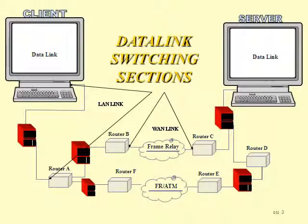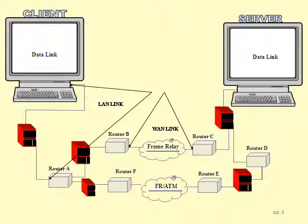Here we have the links shown in our case study. Notice in the middle of the links we're showing switches, but earlier we were showing hubs. Switches are intelligent devices that make decisions — we can call them routing decisions — but they're made using a MAC address or NIC address inside one local area network.